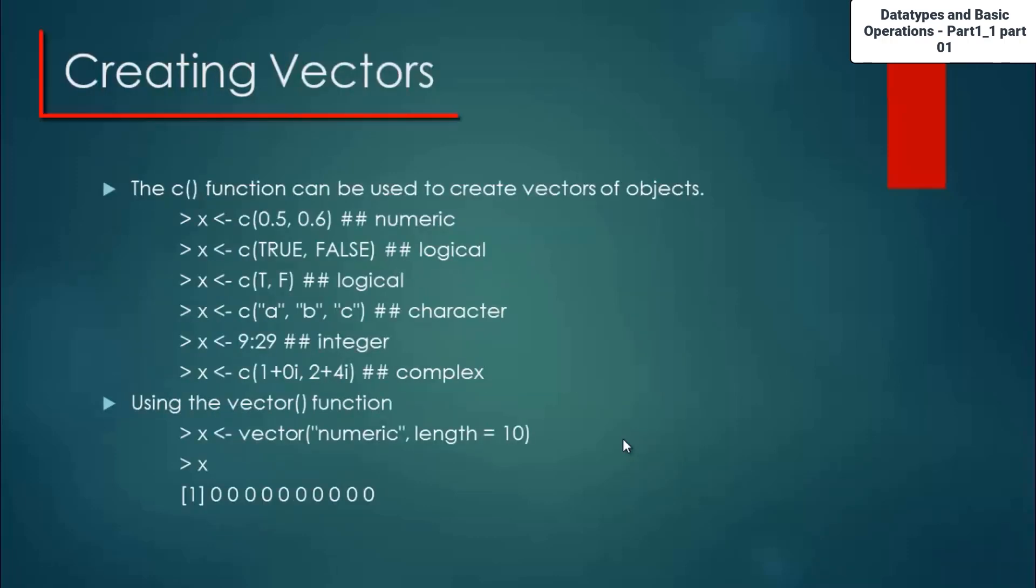Going on to the next part, how to create vectors. The function c followed by set brackets can be used to create vectors of objects. As I told you earlier, a vector is nothing but a collection of same class of objects. It can be any number of values inside the vector, but everything has to be in the same class. Here I have shown you some basic examples to create a numeric vector, a logical vector, a character vector, an integer vector, and a complex vector. We can do all together in the R console now.